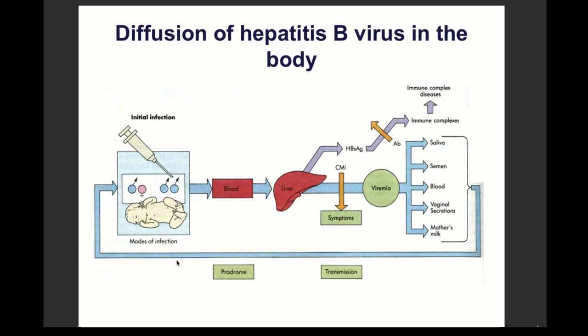After initial infection via a needle prick or vertical transmission, the virus enters the blood causing a first viremia, travels to the liver, then causes a second viremia, disseminating to body fluids — saliva, semen, blood, vaginal secretions, and breast milk. It does not go to connective tissues, only to fluids.